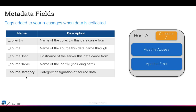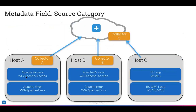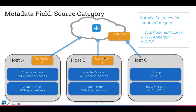The last metadata field, which is bolded here, is source category. Source category can be just about anything you want. It becomes pretty important because with the right naming convention — for example, my Apache Access data gets source category 'WS Apache Access' and Apache Error gets 'WS Apache Error' — you can select a naming convention that allows you to do pretty cool things at search time.